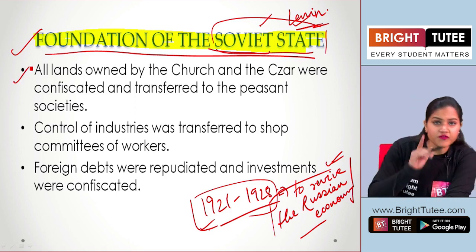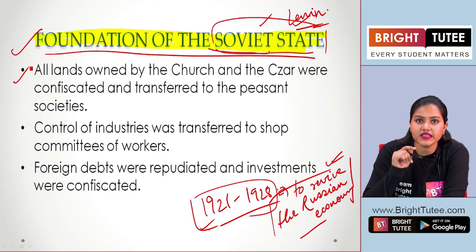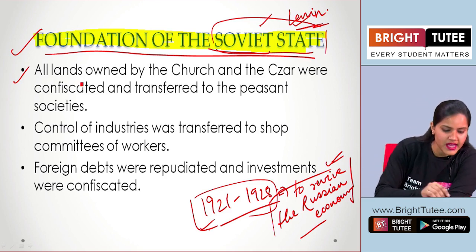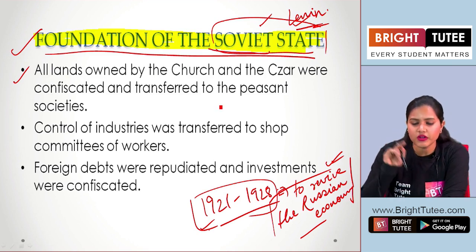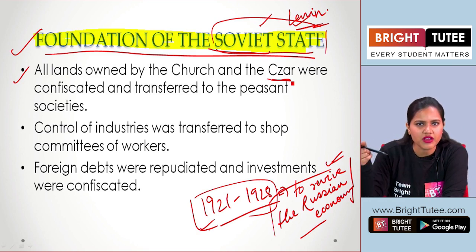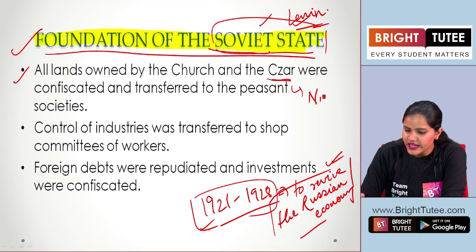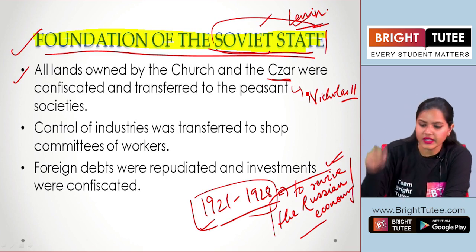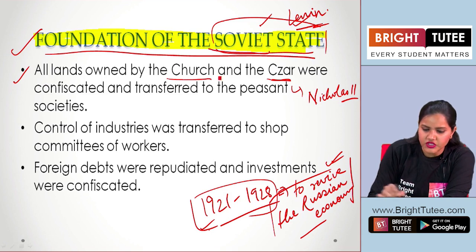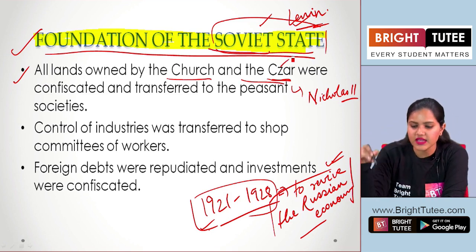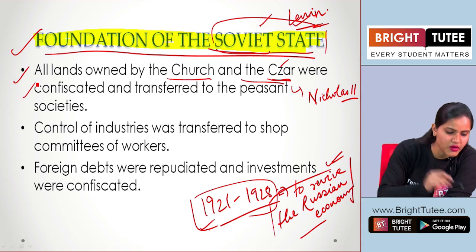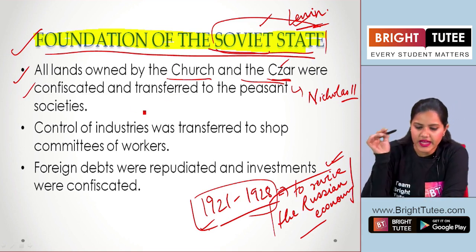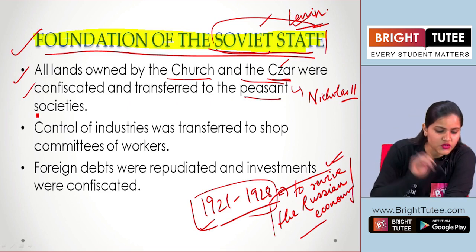So the first revolutionary step taken after the revolution was that all the lands owned by the church and the Tsar — and do you remember who was the Tsar during the First World War? It was Nicholas II. So all the lands under the church and the Tsar were confiscated — they were taken by Lenin's government and transferred to the peasant societies.